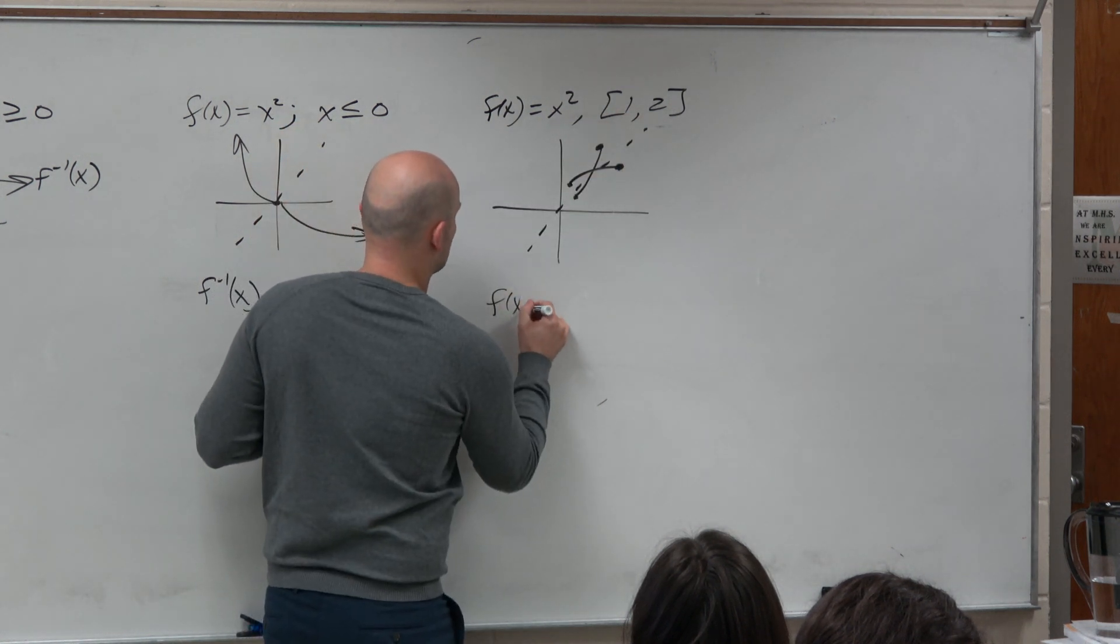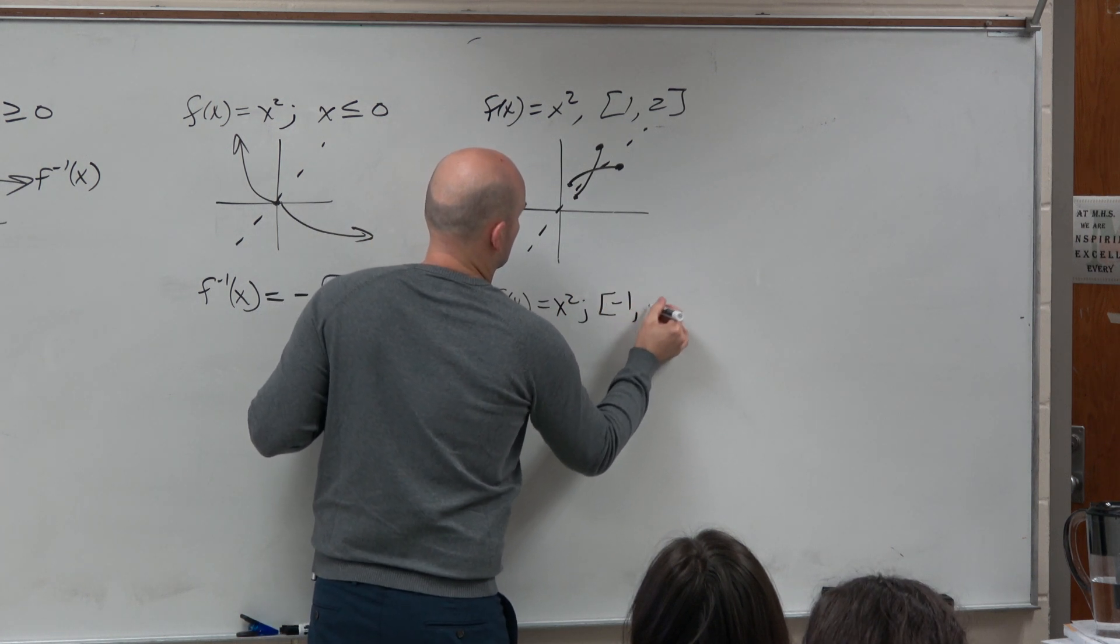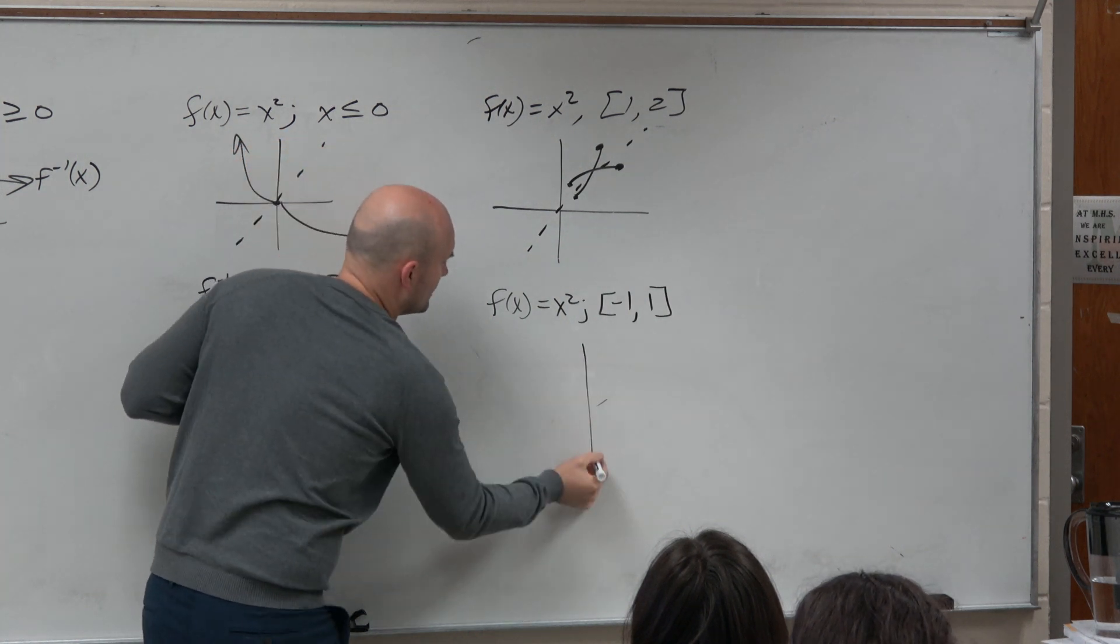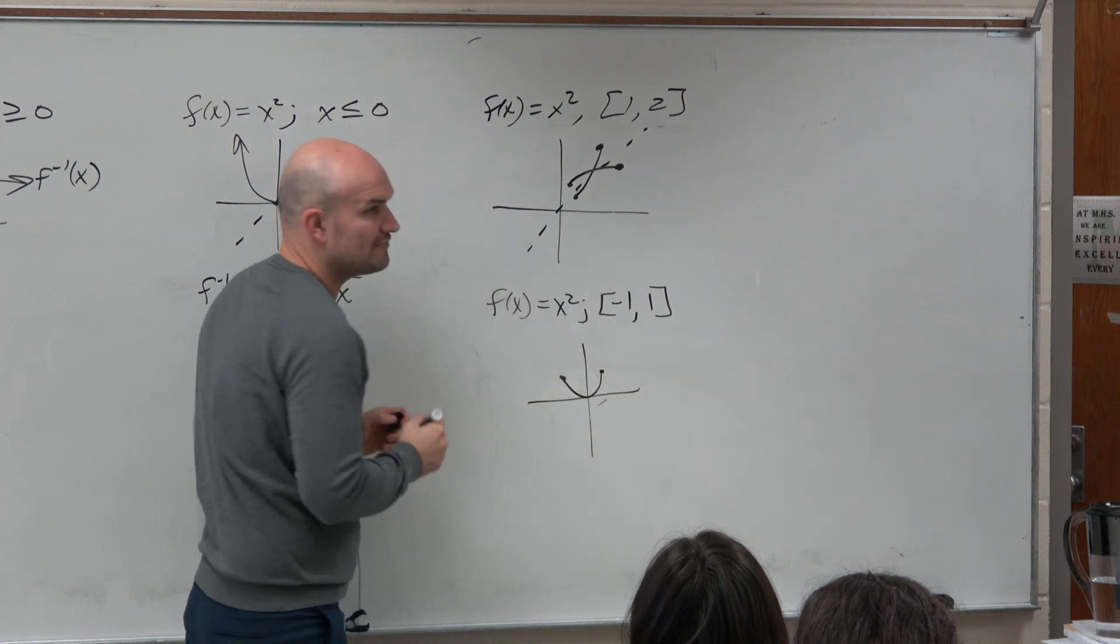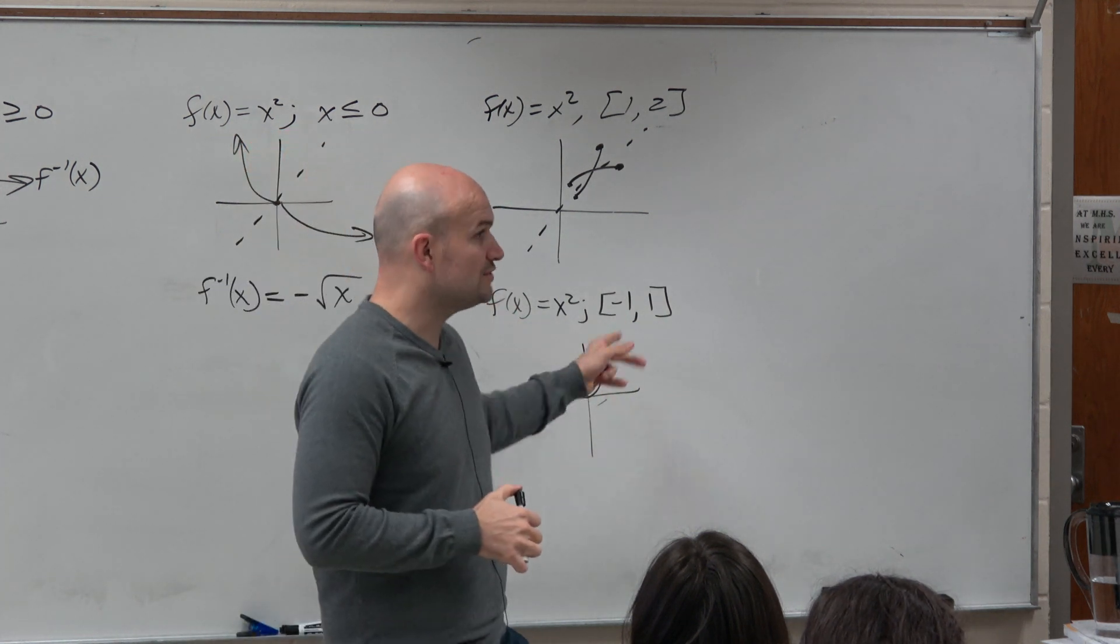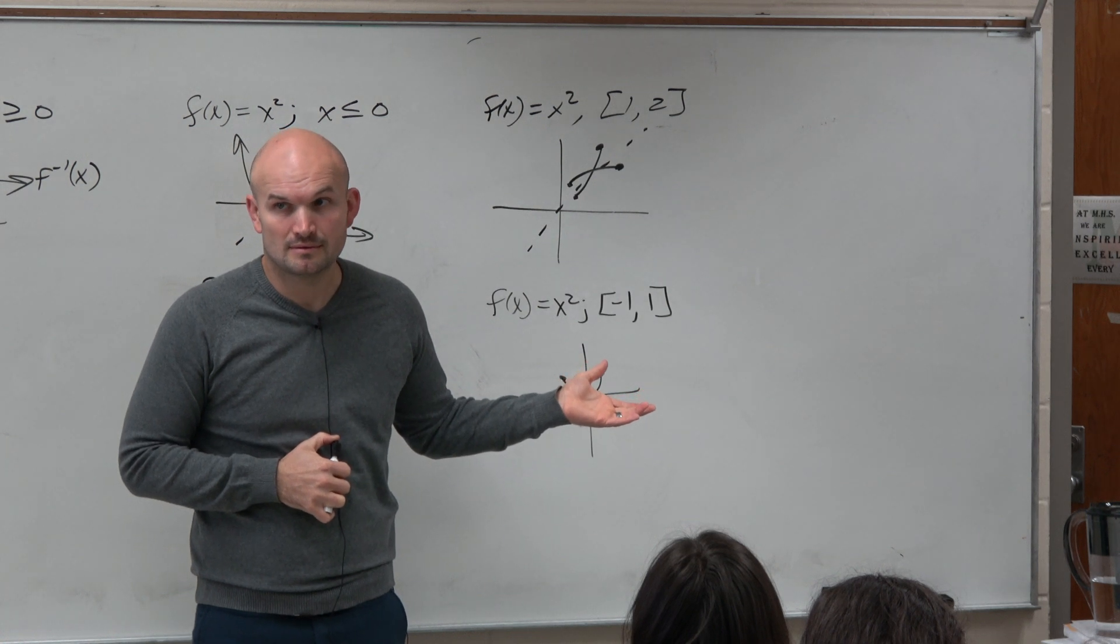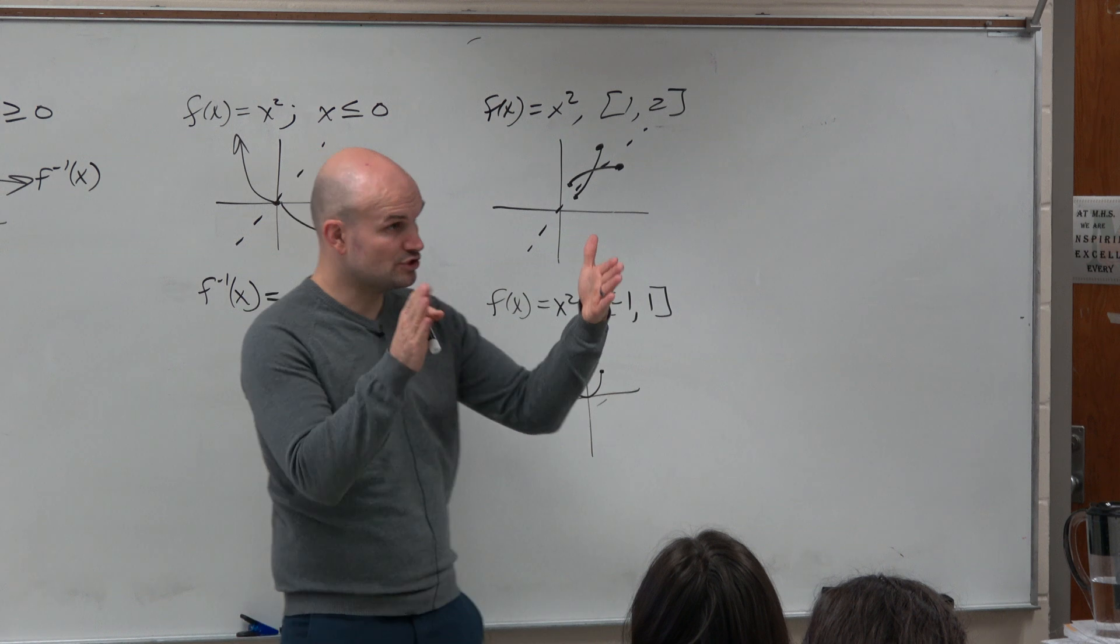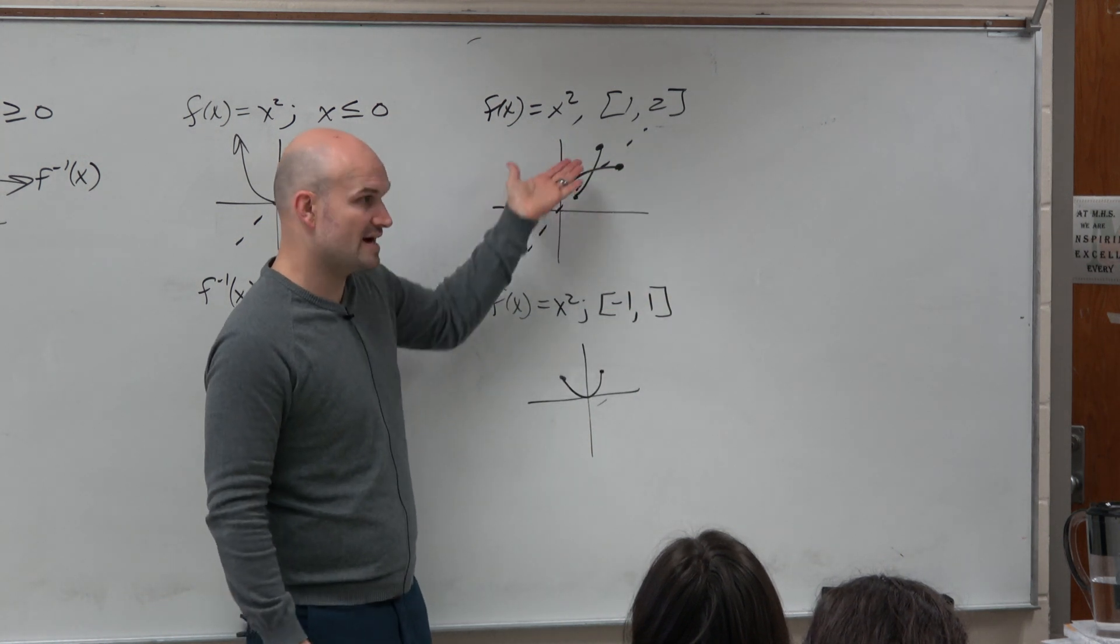What if I restrict the graph from negative 1 to 1? Well, now, my graph would look like that. Does that now produce an inverse that's a function? No, because this is not 1 to 1. So as long as we're choosing an interval that produces a 1 to 1 function, we can find the inverse. It's invertible.